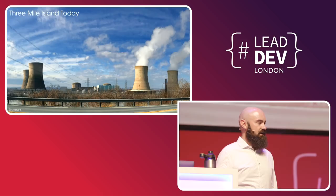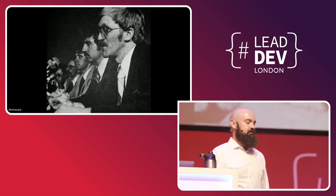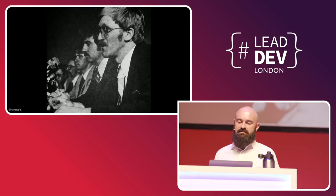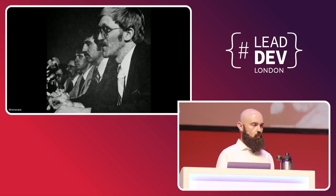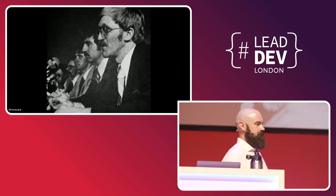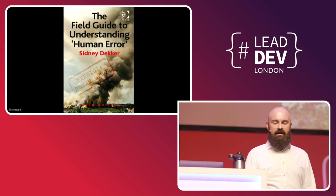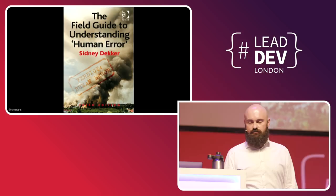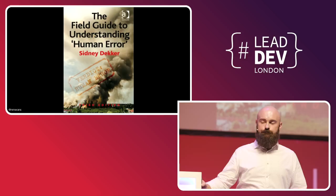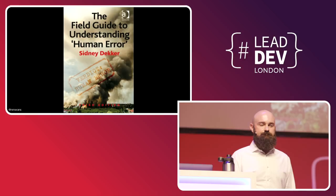What happened? How did these four men miss so many signs along the way that the reactor was in the middle of a loss of coolant accident? Why didn't they just leave the emergency cooling system on when it activated? Why didn't they close the block valve sooner? Maybe we're looking at this the wrong way. Sidney Decker's wonderful book, The Field Guide to Understanding Human Error, is an in-depth guide to investigating and understanding what happened when things go wrong. In it, he introduces the concept of first stories and second stories. The story I've just told you is the first story of the accident of Three Mile Island — deliberately so. First stories focus on the humans in the story and what they should have done differently, and almost always lay the blame for an accident at the feet of the humans involved.